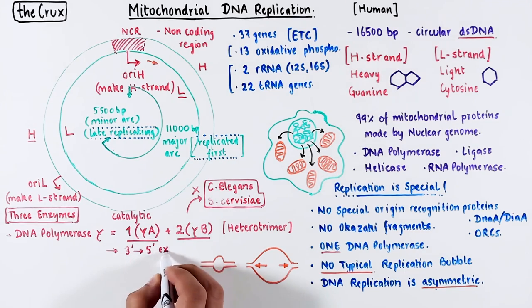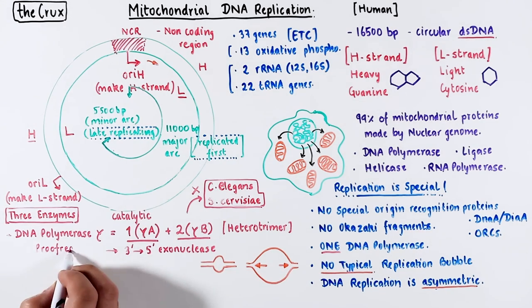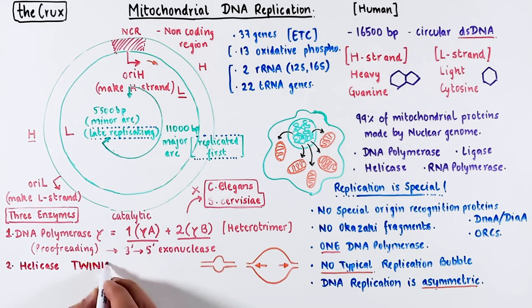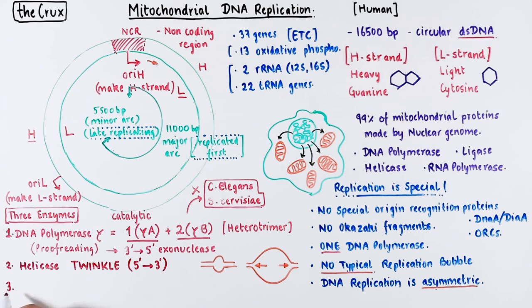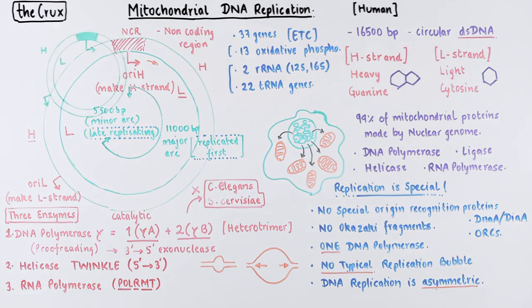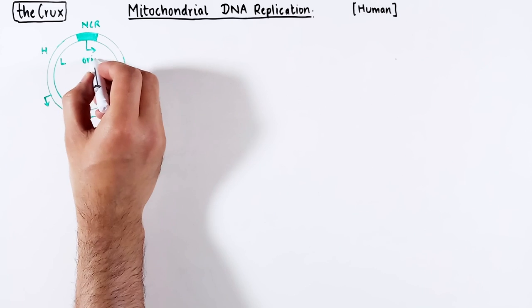The core also has exonuclease or proofreading activity to fix any replication errors. The helicase is called Twinkle, which functions as a hexameric complex. When it was identified under the microscope, the images resembled stars on a dark night — hence Twinkle. The third enzyme is POLRMT, or polymerase RNA of mitochondria.